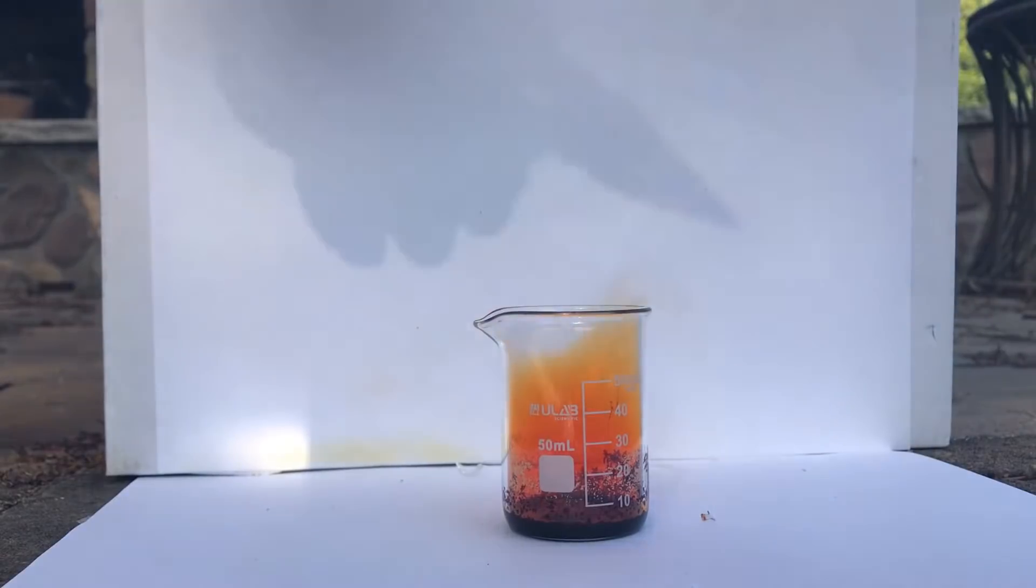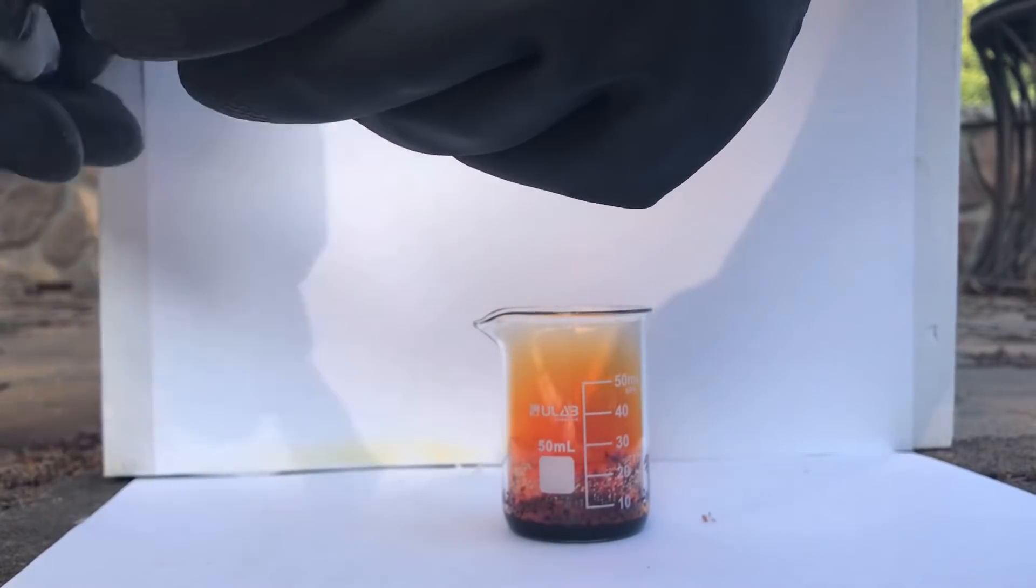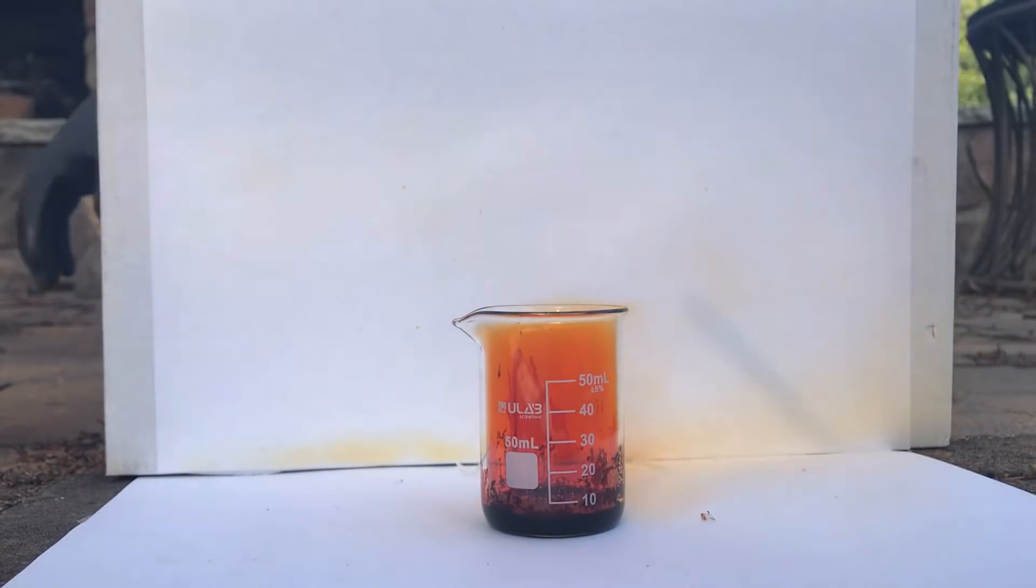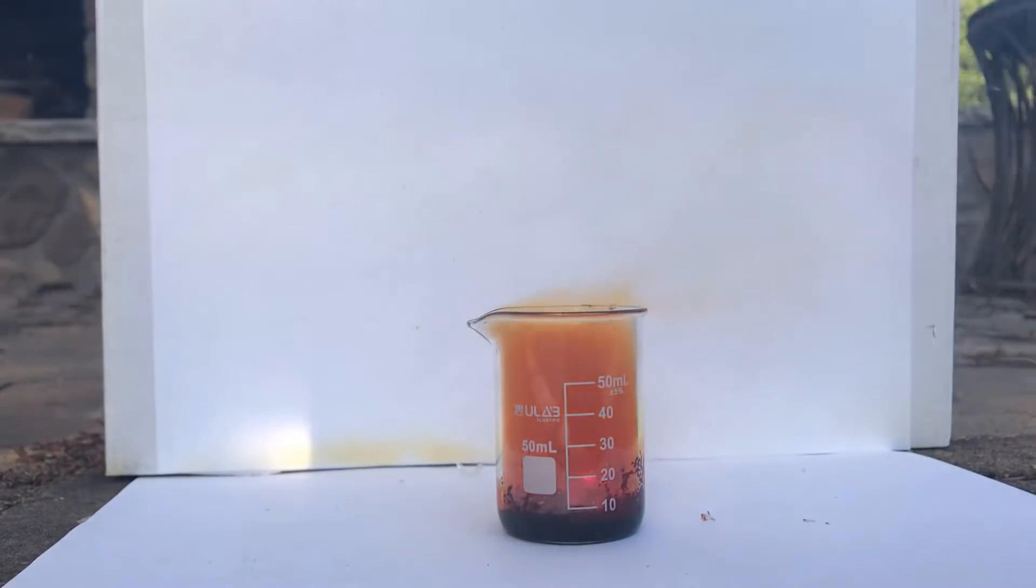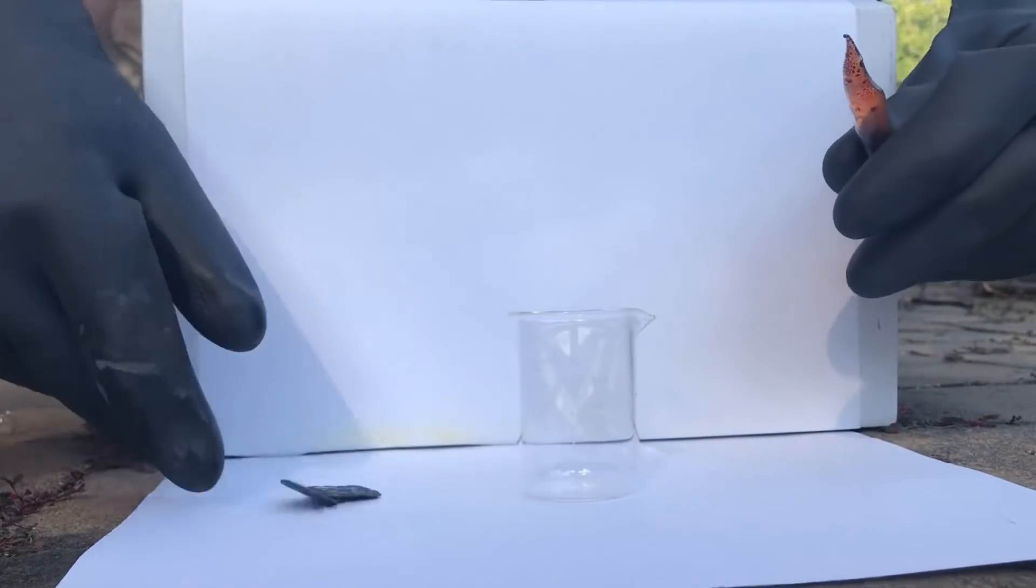Alright, so first we're going to pour in some more bromine, because we're going to try this again. So more bromine, and now we're going to take the torch. Alright, so we're going to be reacting lithium metal with bromine.